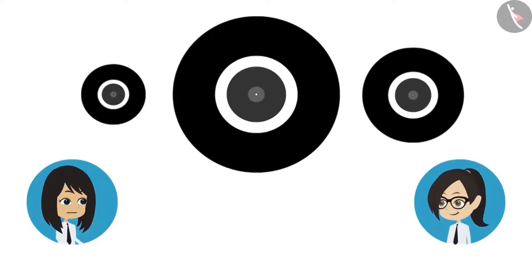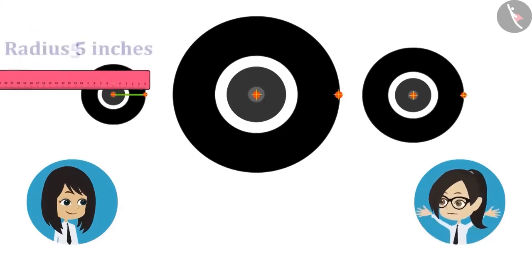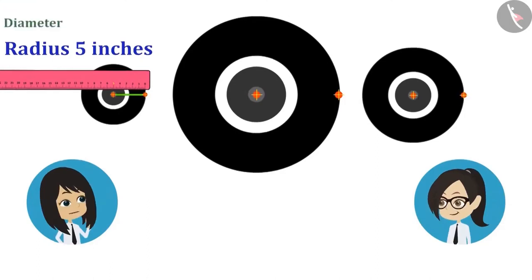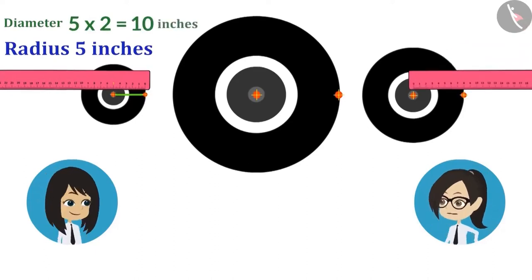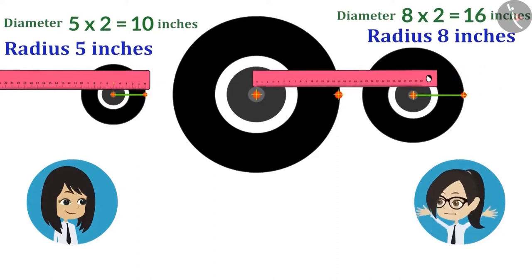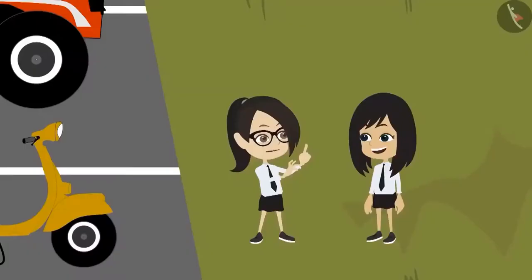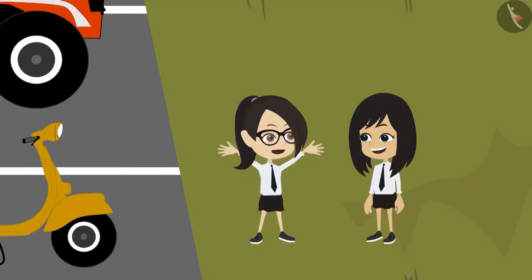Now let's find the centre for all wheels and measure the distance from the centre to the boundary. The radius of the wheel of the scooter is 5 inches, meaning its diameter is 10 inches. The radius of the front wheel of the tractor is 8 inches, so its diameter is 16 inches. The radius of the rear wheel of the tractor is 15 inches, so its diameter is 30 inches. We took the measurements of all the wheels.